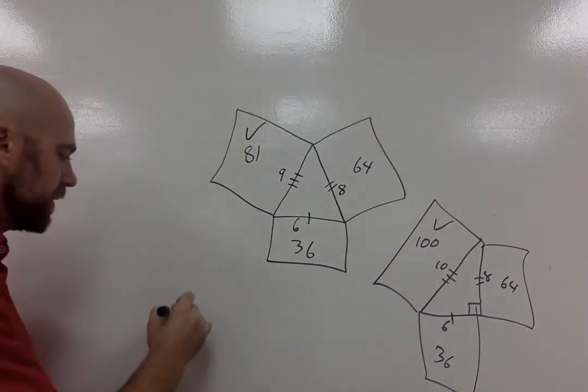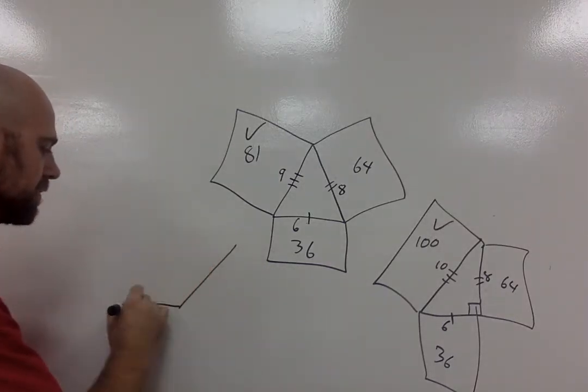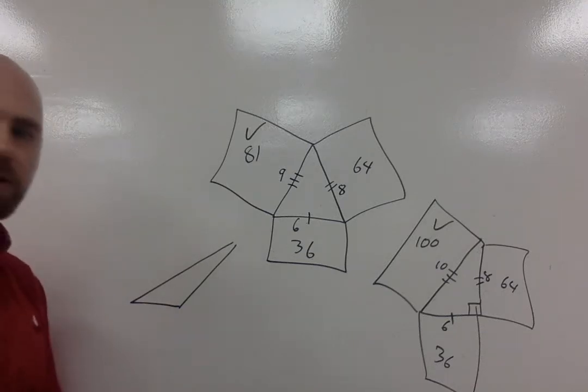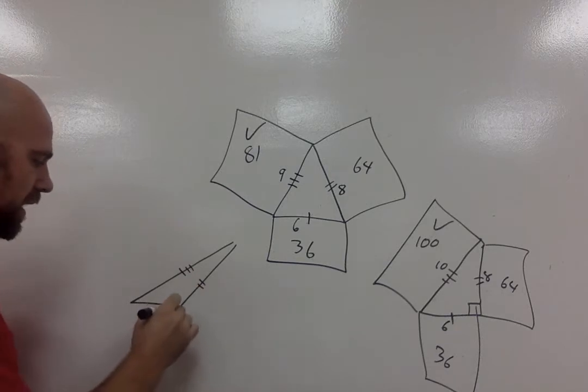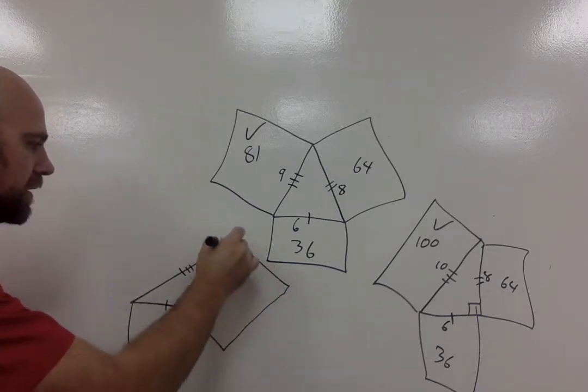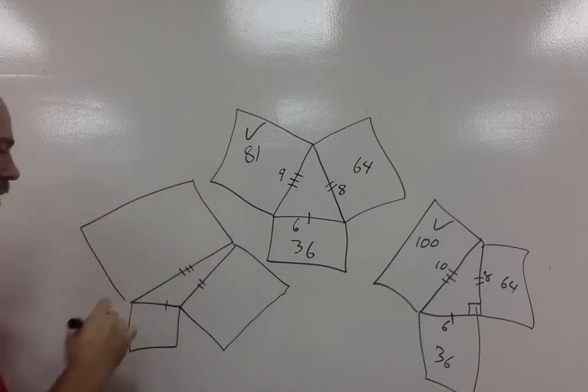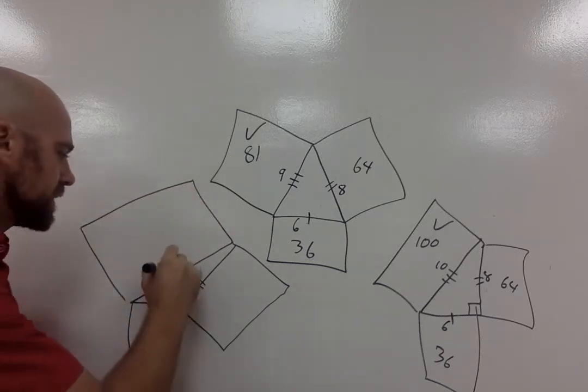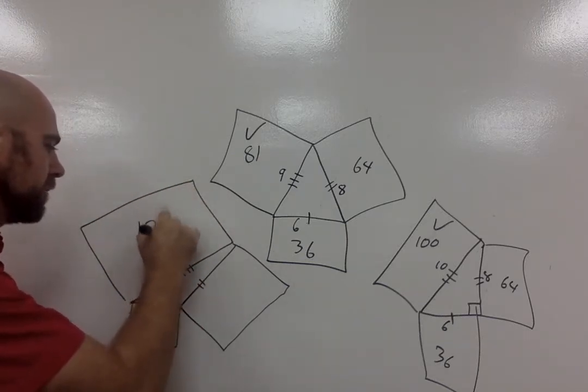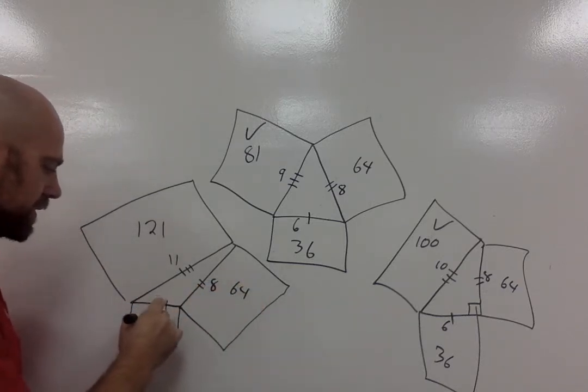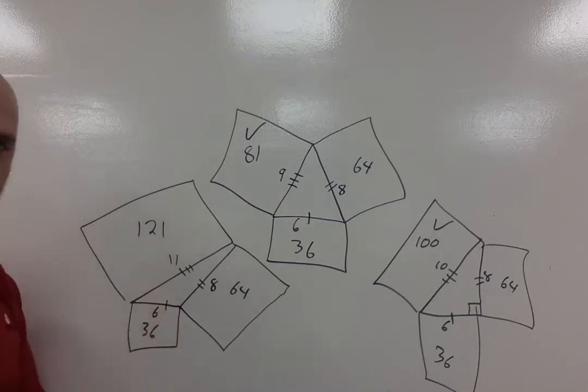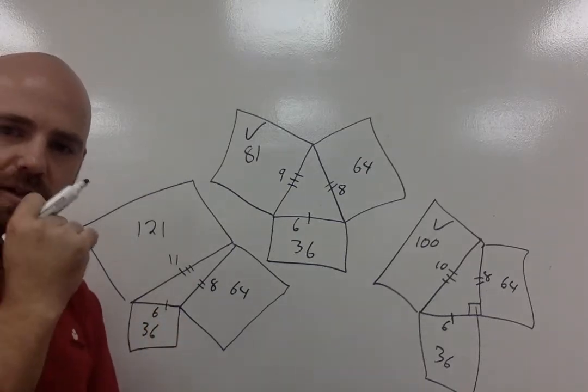And then for the last one, I'm going to draw it over here. So if we have something like this, for example, where our longest, once again, all three of these are different lengths, our longest line is the one we're focusing on. So if this is 11, we'd have 121. If this is 8, we'd have 64. And if this is 6, we would also have 36.